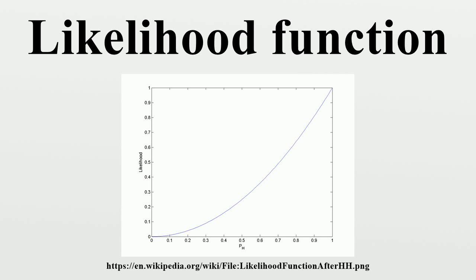Maximizing the log likelihood first requires taking the partial derivative with respect to beta. If there are a number of independent observations x1 through xn, then the joint log likelihood will be the sum of individual log likelihoods, and the derivative of this sum will be a sum of derivatives of each individual log likelihood. To complete the maximization procedure for the joint log likelihood, the equation is set to zero and solved for beta. Here, the notation denotes the maximum likelihood estimate, and the sample mean of the observations.